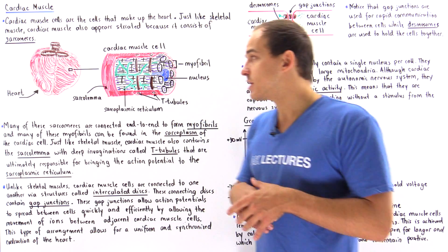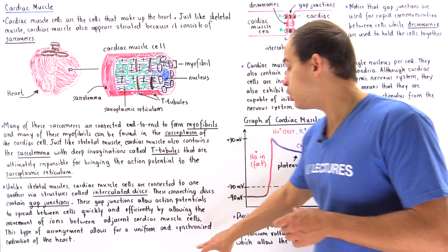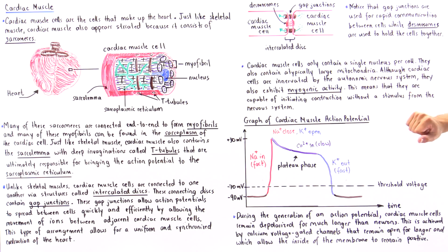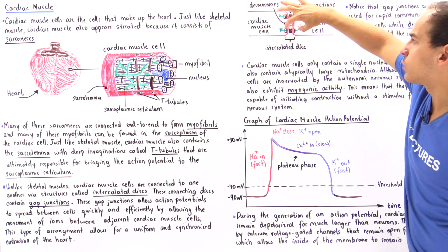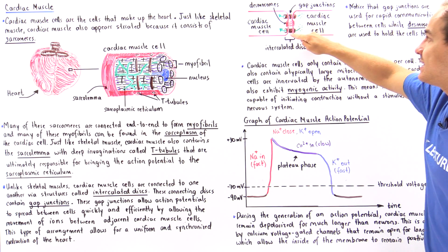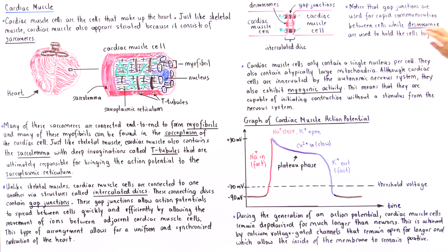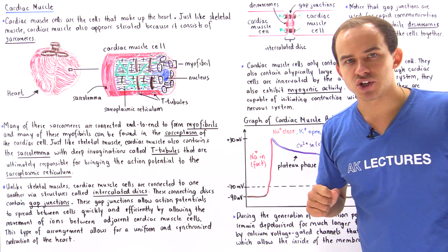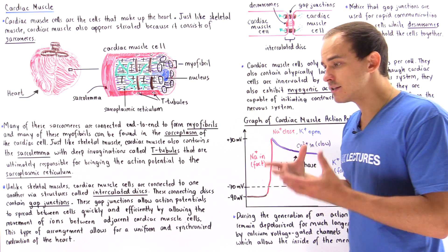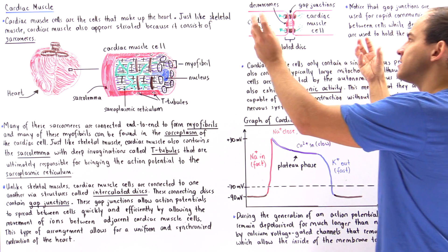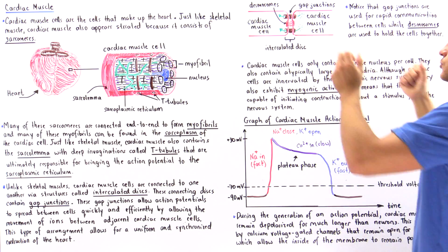This arrangement of cardiac muscle cells allows for a uniform and synchronized contraction of the heart. In the diagram, cardiac muscle cell one and cardiac muscle cell two are separated by intercalated discs. These contain a gap junction for rapid communication, and also a second junction called the desmosome, which glues the two cells together and holds them in place during contraction.